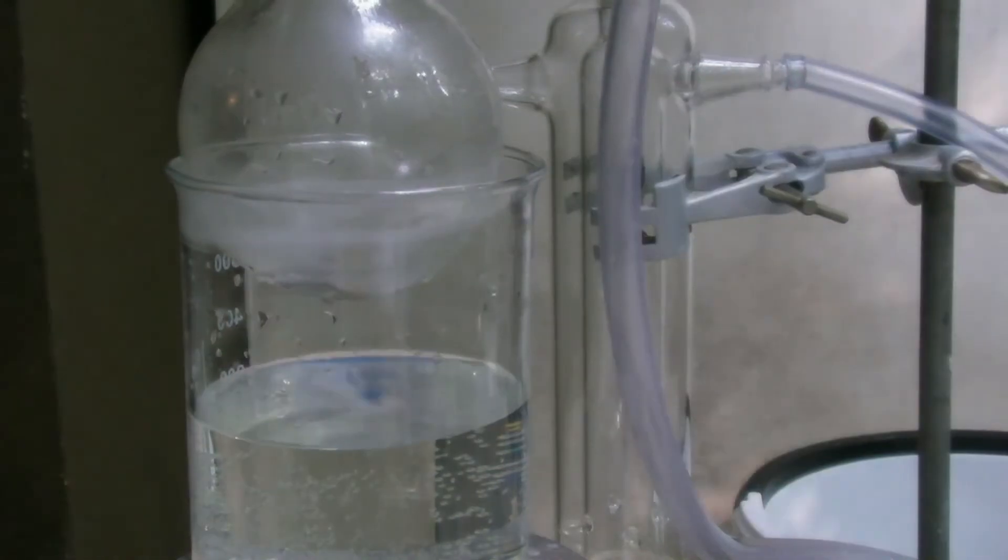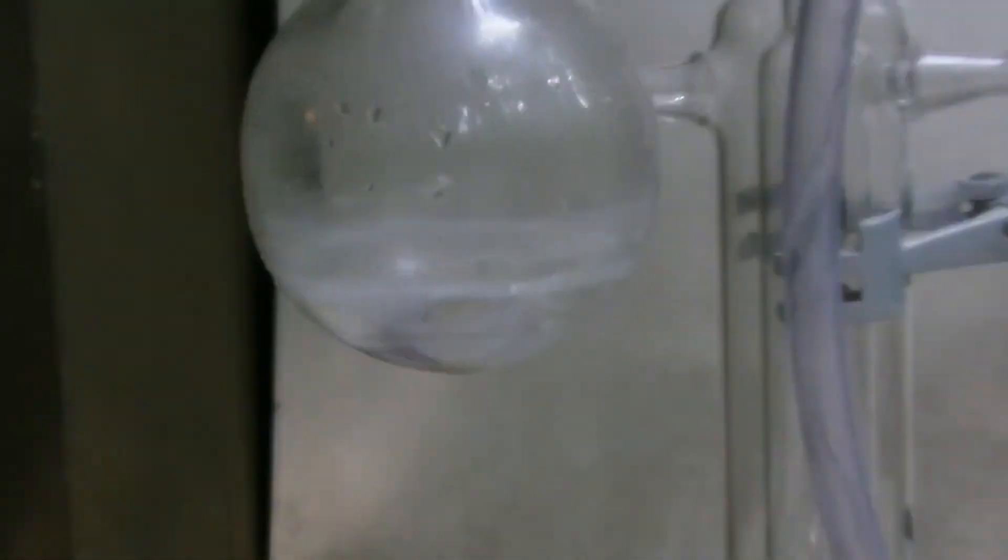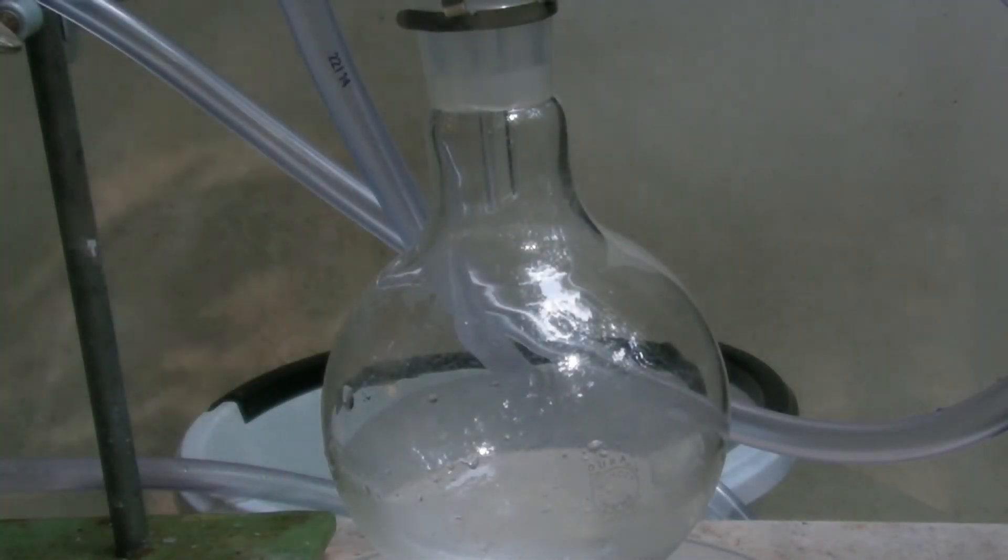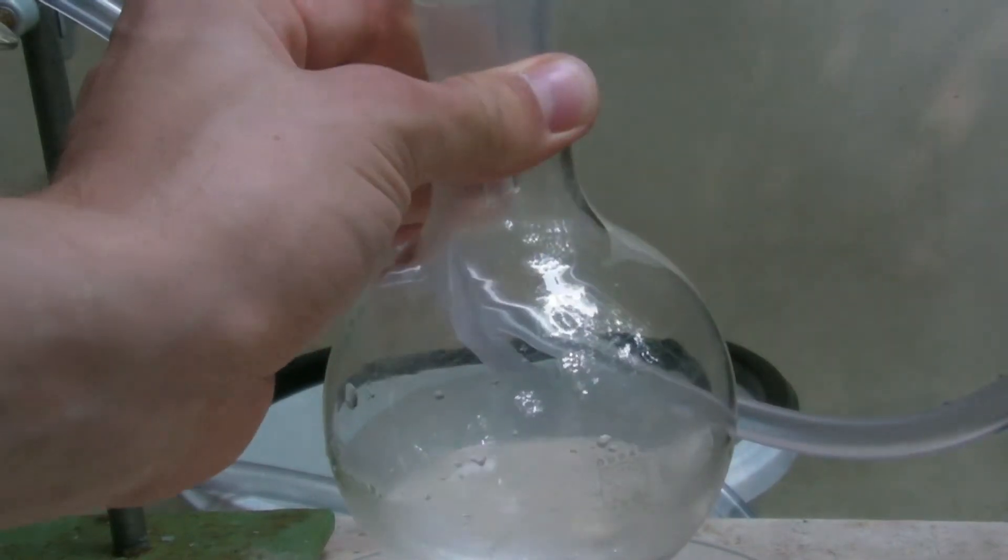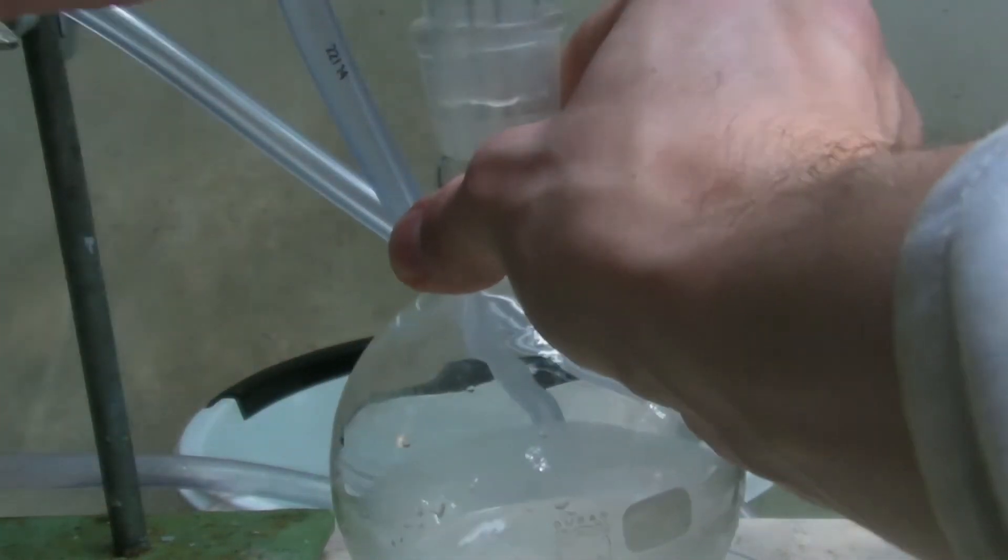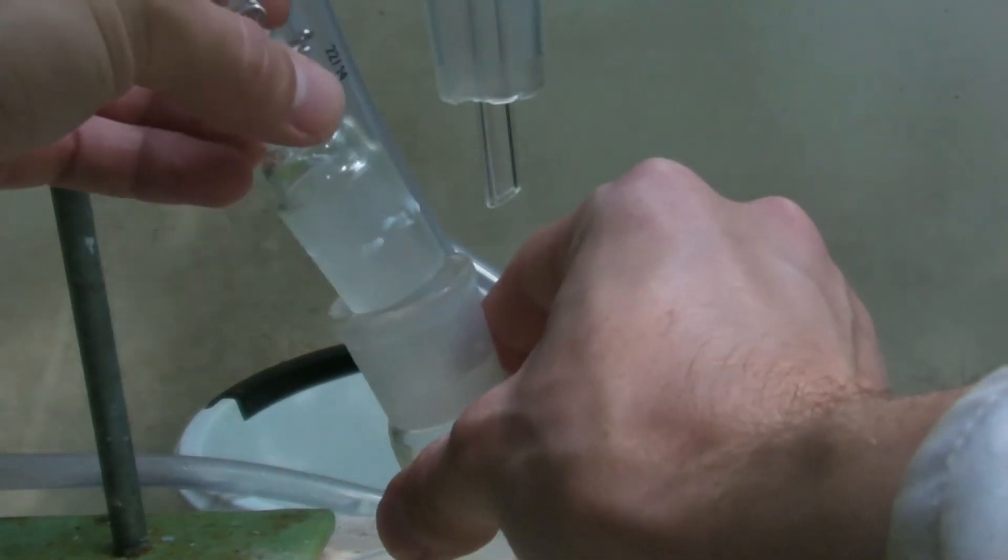When a small residue is left in the flask, the distillation is finished. It is never distilled to dryness due to safety reasons. The receiving flask can be removed when the apparatus has cooled down. The joint should be greased well to keep moisture from leaking into the flask.